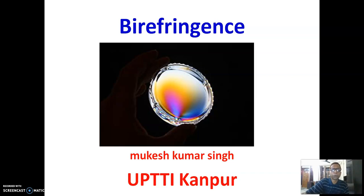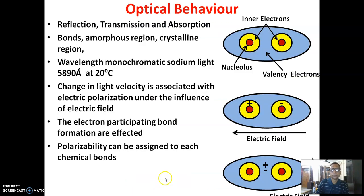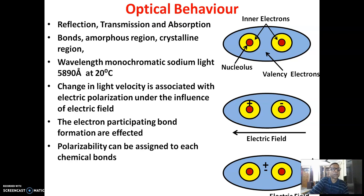Dear students, today I will talk about birefringence. Birefringence is basically the optical behavior of different materials. If you look at the optical behavior of different textile materials, it is a combination of reflection, transmission, and absorption.